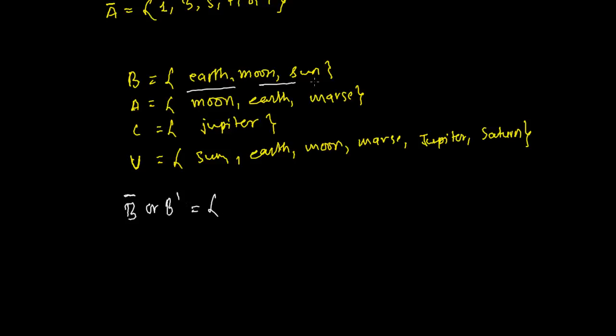So here you just see the universal set. Where is Sun, where is Earth, I mark Earth here, where is Moon, Moon I mark here, where is Sun, I mark here. So except these three, everything, so here I can write Mars, I can write Jupiter, I can write Saturn.